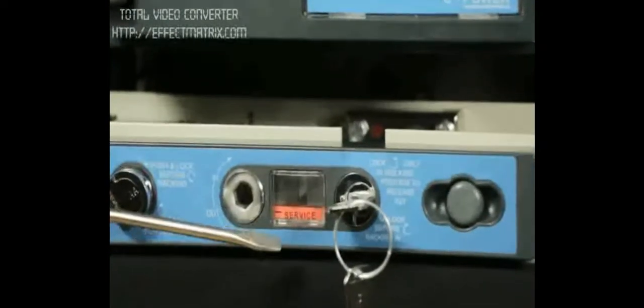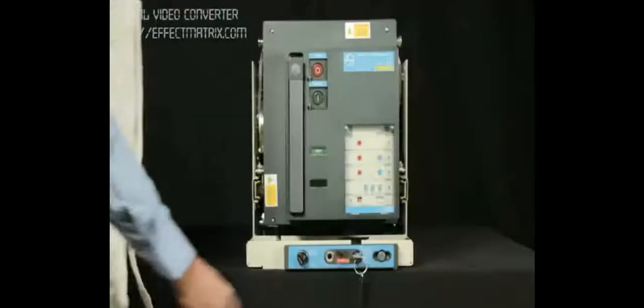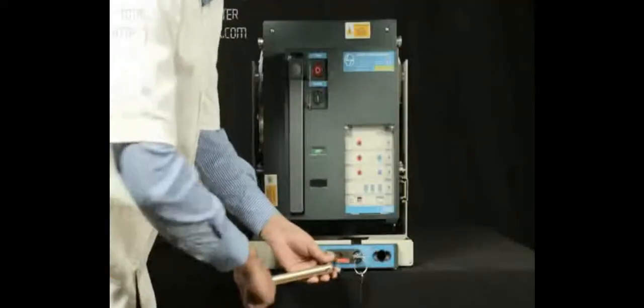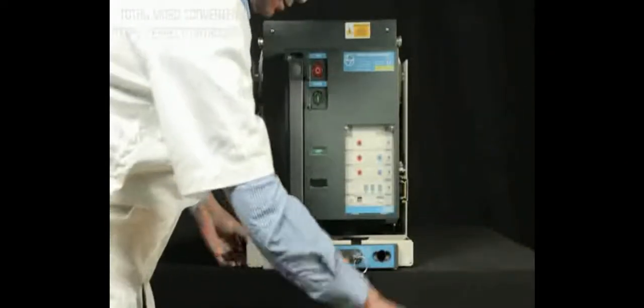Now breaker is in service position. Take out the racking handle from the cradle. Insert the handle in the slot provided for racking and rack out. Rotate it in anti-clockwise direction until breaker comes to isolated position.